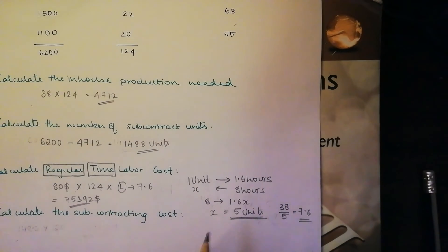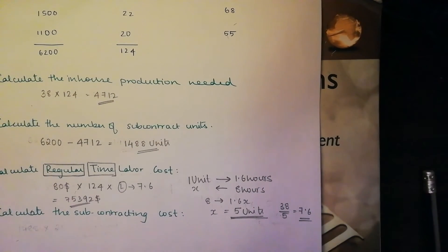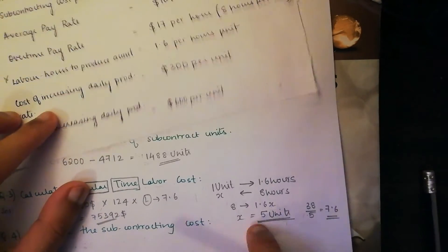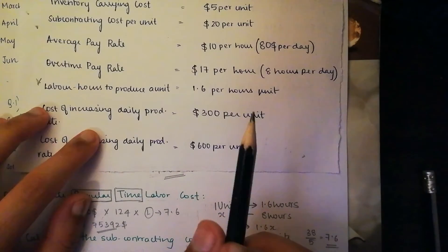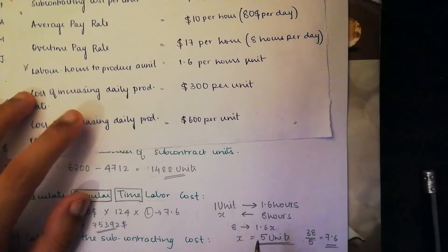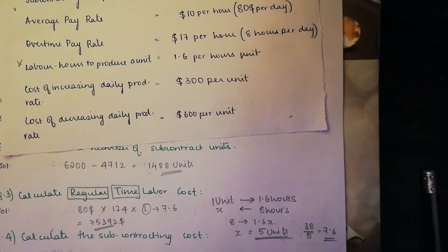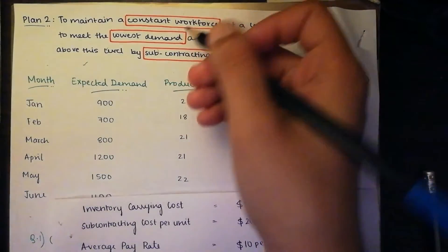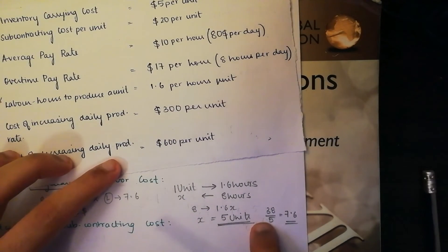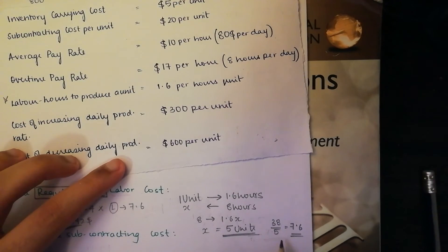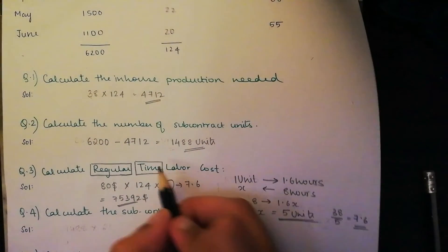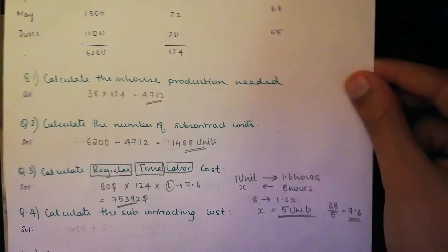As explained in my previous video, you need the data sheet to help you proceed with this step — knowing how many units you can produce in 1.6 hours and how many units total in one single day. You then divide that by the demand you are trying to meet, which is the lowest demand. Here it's 38 divided by 5 equals 7.6 workers, so the regular labor cost is $75,392.